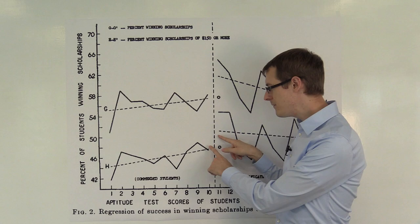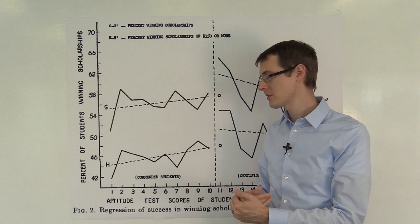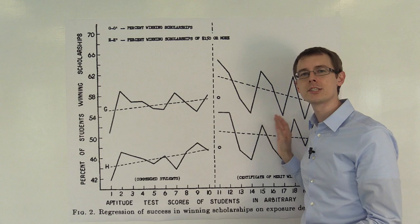even though our point estimate, just the difference in these regression lines we see, is positive, so that suggests there is a treatment effect, which is what the authors conclude, we actually wouldn't have a statistically significant effect because of all the excess variation that's going on over here.